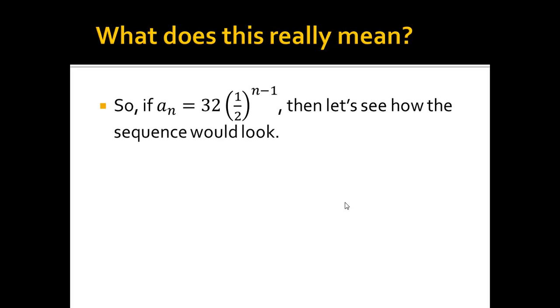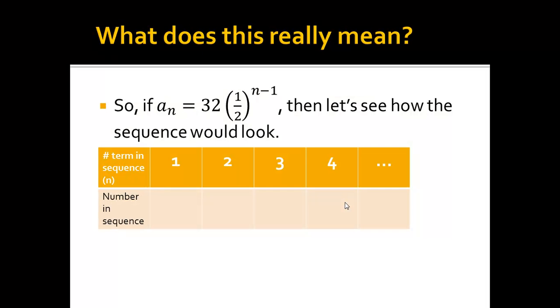What does this really mean? So if a sub n is equal to 32 times 1 half raised to the n minus 1 power, how would this sequence look? Well, if I set up a table, and I had number of term in the sequence is n, and I just kind of worked my way up, I would start with the zeroth term.